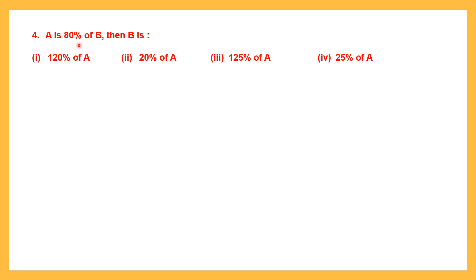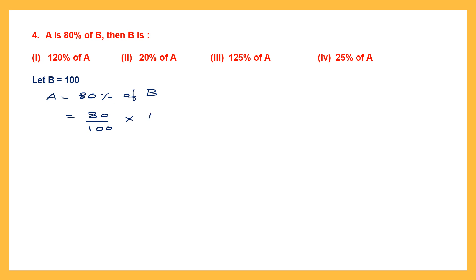Question 4. A is 80% of B. Then B is what percent of A? Let B be 100. Then A is 80% of B, which is 80 by 100 into 100. Cancelling the 100s, A equals 80. Now to find B as a percent of A: B by A into 100%, which is 100 by 80 into 100%.